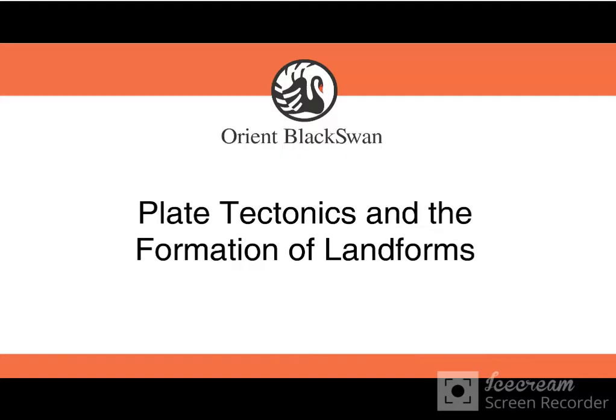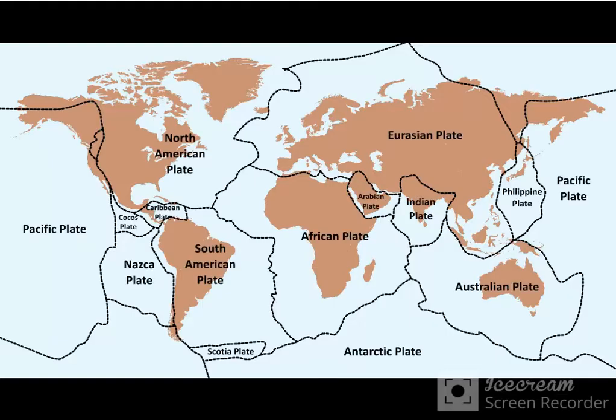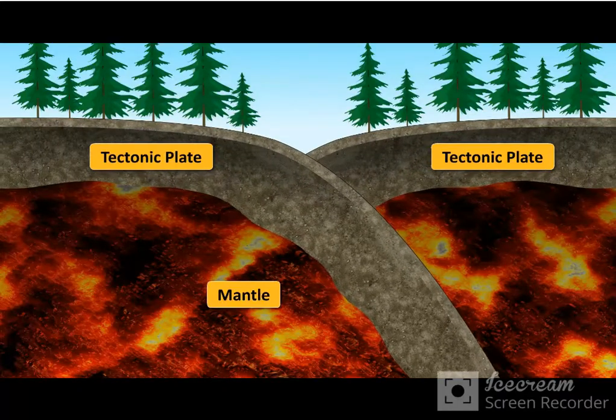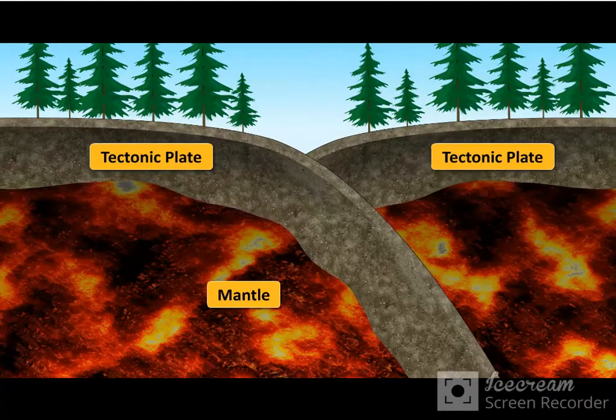Plate Tectonics and the Formation of Landforms. The Earth's crust is made up of several large and rigid pieces called tectonic plates. These plates are constantly moving over the semi-liquid upper layer of the mantle. This movement is called plate tectonics.